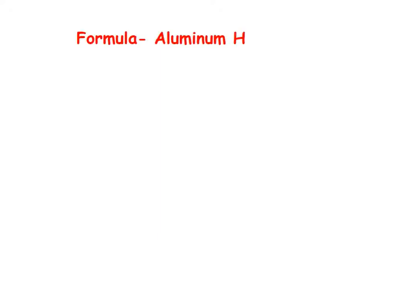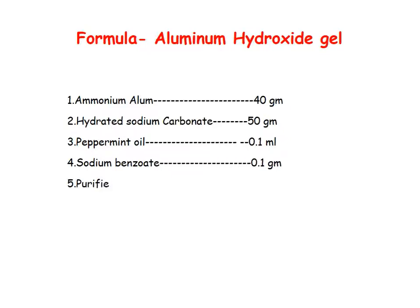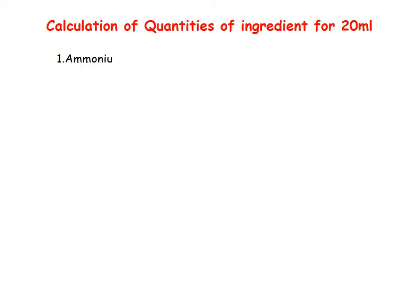Formula for Aluminium Hydroxide Gel: ammonium alum 40 g, hydrated sodium carbonate 50 g, peppermint oil 0.1 ml, sodium benzoate 0.1 g, and purified water quantity sufficient to prepare 100 ml. This is the formula for 100 ml. We are going to prepare 20 ml, so we need to calculate all ingredient quantities accordingly. For example, ammonium alum requires 40 g for 100 ml.